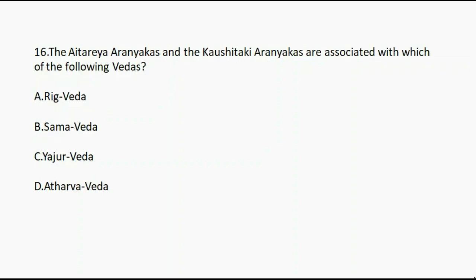Question number sixteen: The Aitareya Aranyakas and the Kaushitaki Aranyakas are associated with which of the following Vedas? Option A: Rig Veda. Option B: Sam Veda. Option C: Yajurveda. Option D: Atharva Veda. And the correct answer is option A, Rig Veda.